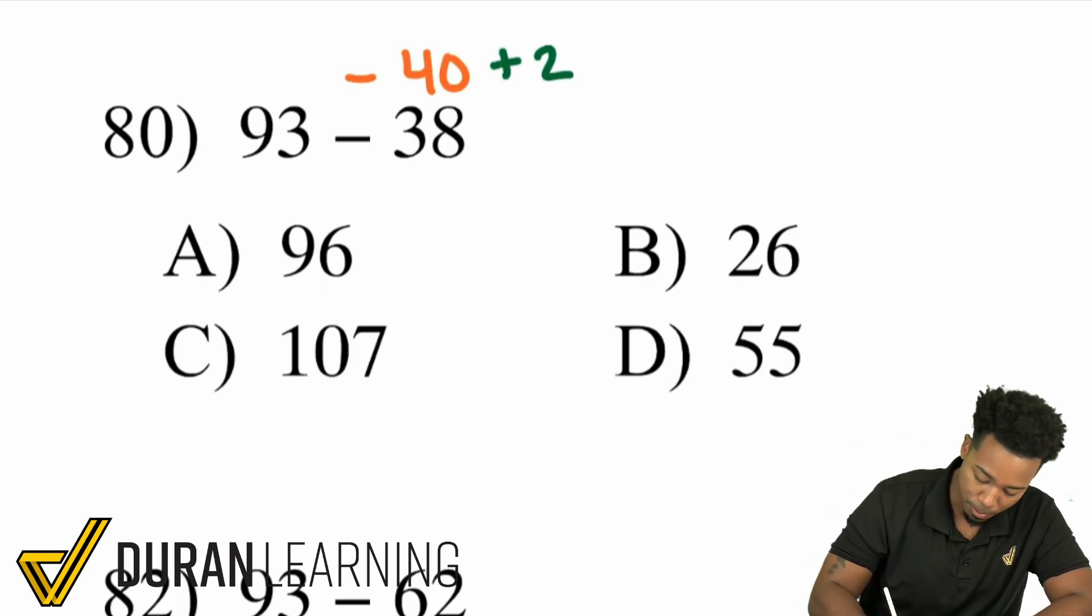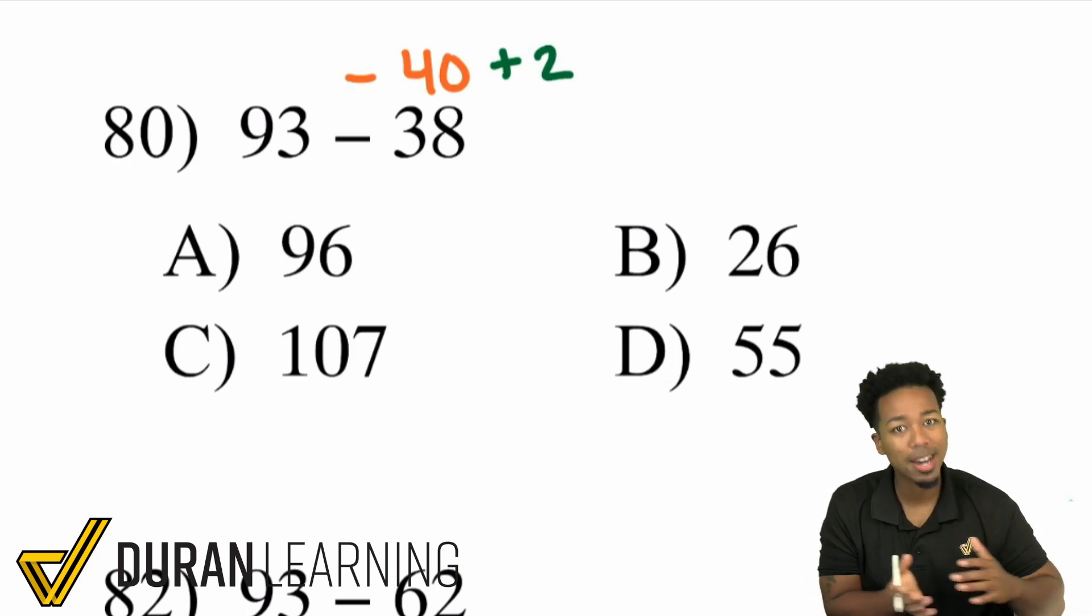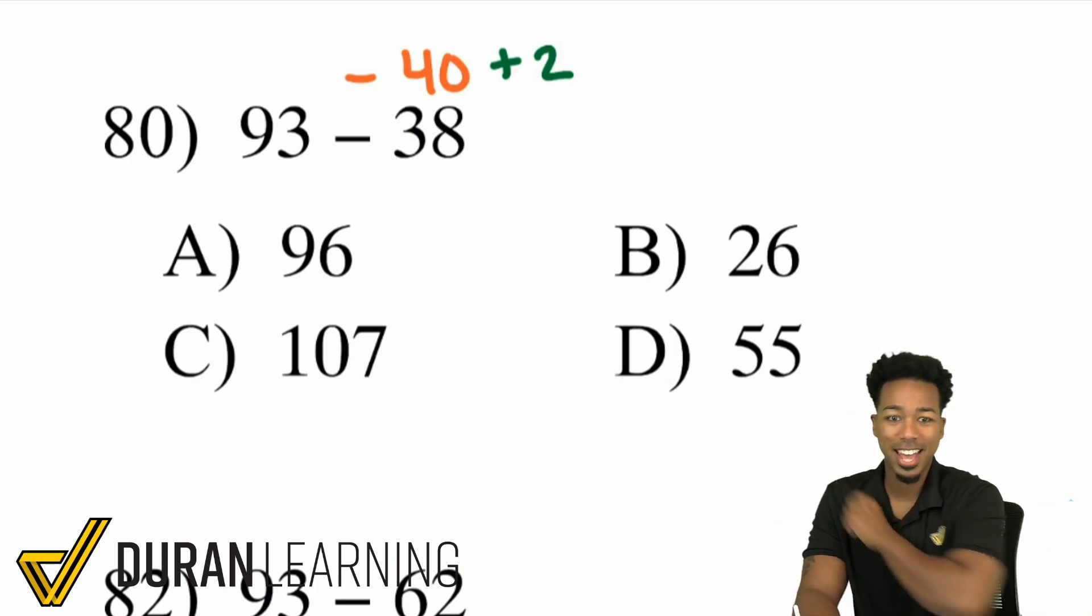So I got to add 2 back. I estimated the 40 and I got to compensate. I got to make up for it by adding 2 back. Because if you take away 40 then add 2 it's only taking away 38 which is exactly what we have.